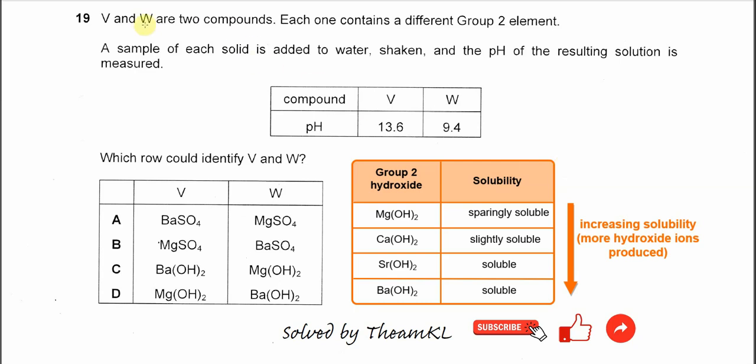Question 19. V and W are two compounds. Each one contains a different Group 2 element.